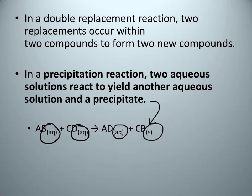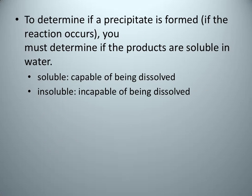Remember, with double replacement reactions, we have two replacements occurring: A replaces C and C replaces A, or B replaces D and D replaces B. Part of what we're going to be doing here is to determine if a chemical reaction will even occur — will our two aqueous solutions actually form a precipitate? If so, then we have a double replacement reaction.